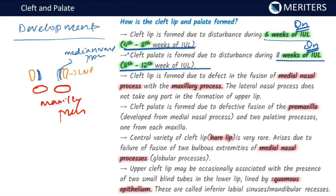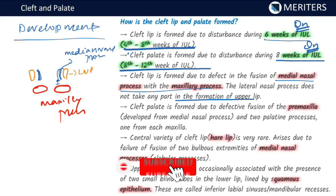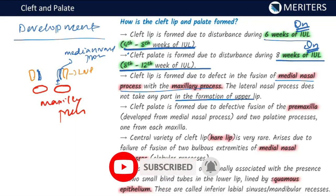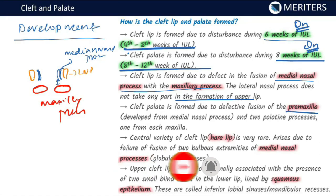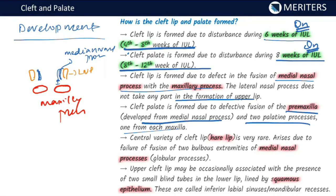Cleft lip is formed due to a defect in fusion of the median nasal process with the maxillary process. The lateral nasal process does not take part in any formation of the upper lip, and clefting is mainly seen in the upper lip. The cleft palate is formed due to defective fusion of the pre-maxilla, developed from the median nasal process, and the two palatine processes.